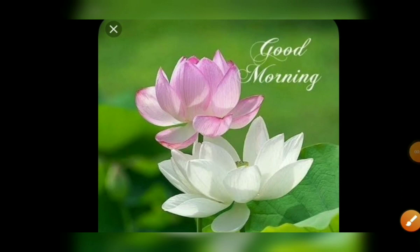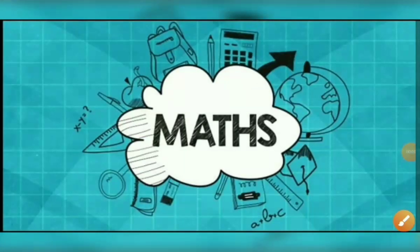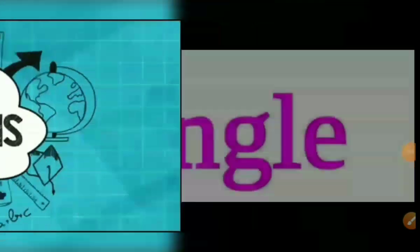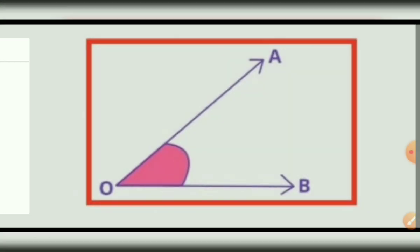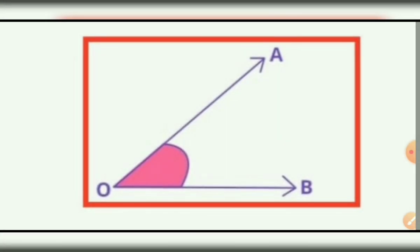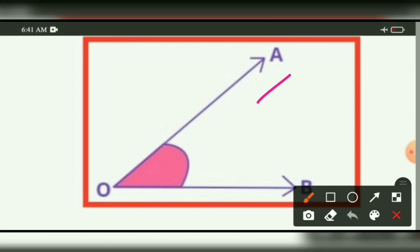Good morning children, welcome back to Max Online Class. Watch the video carefully. In this session we will see angles. What do you mean by angle? An angle is formed between two rays — here OA is one ray and OB is one ray — and between these two rays an angle is formed.